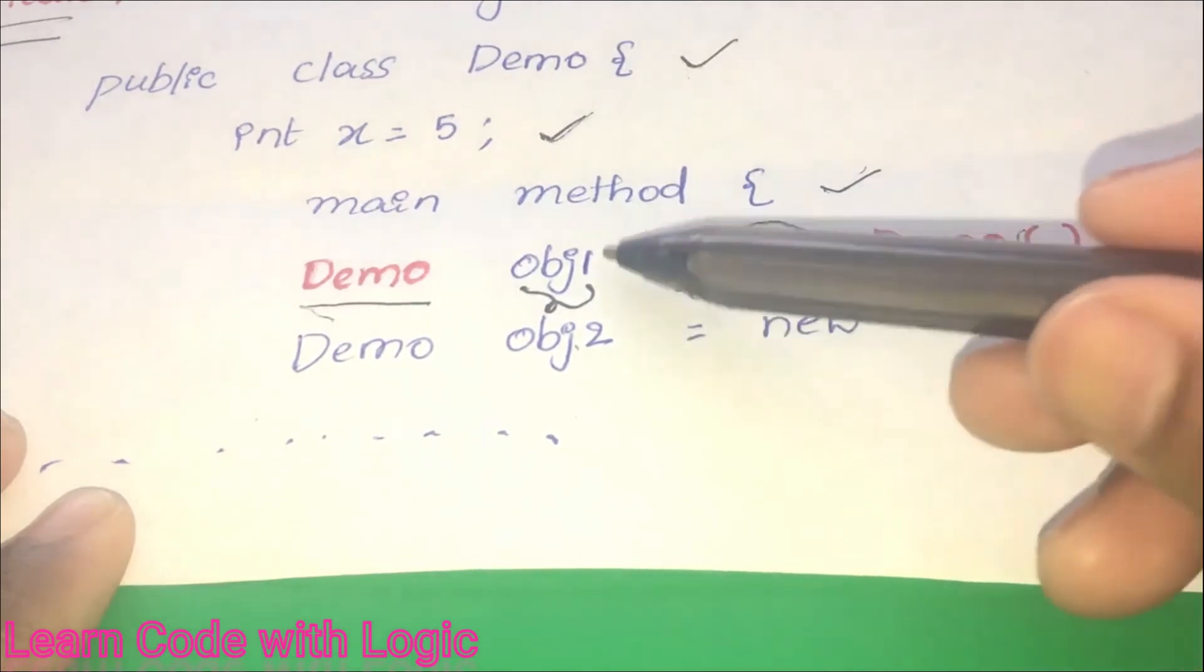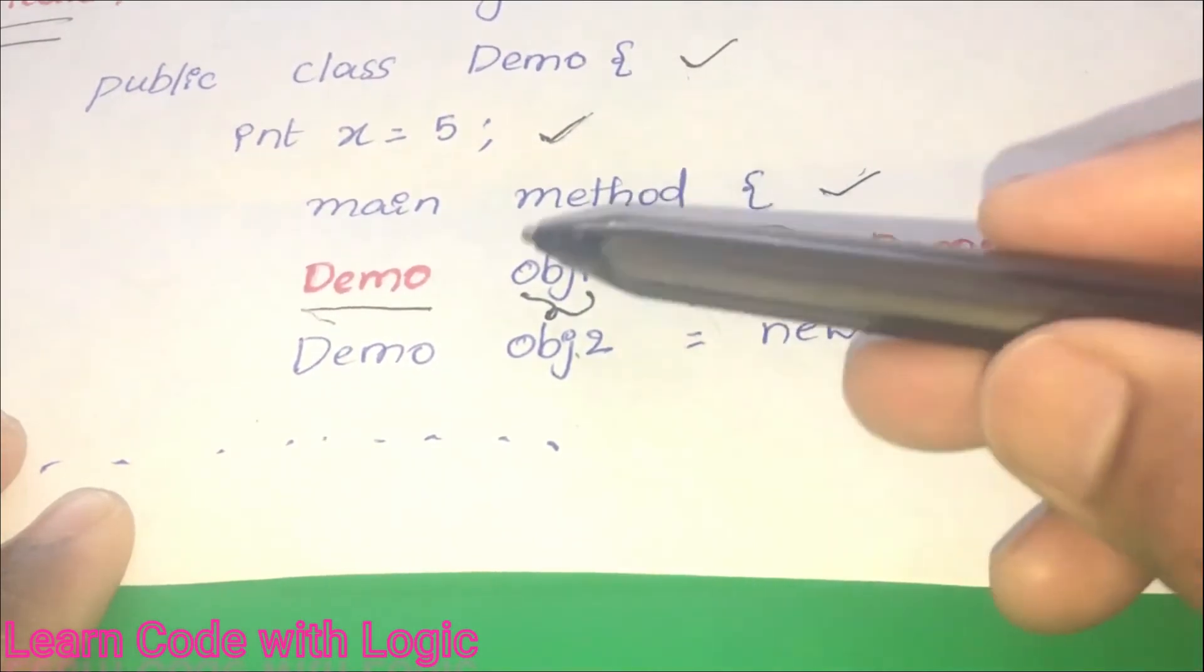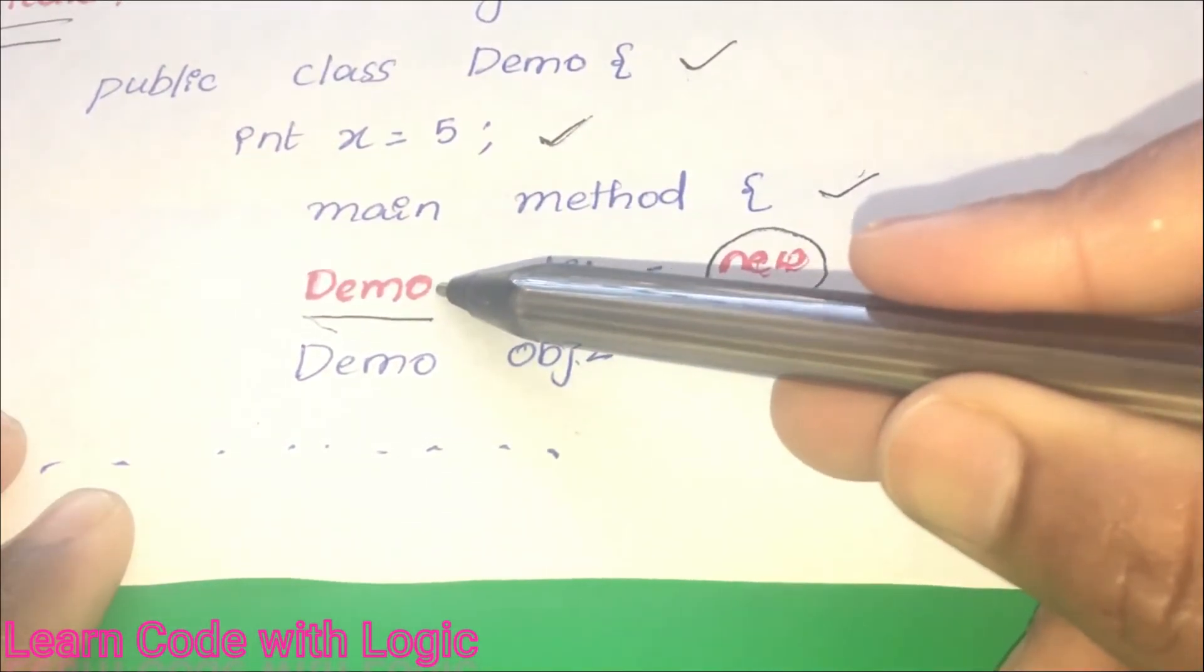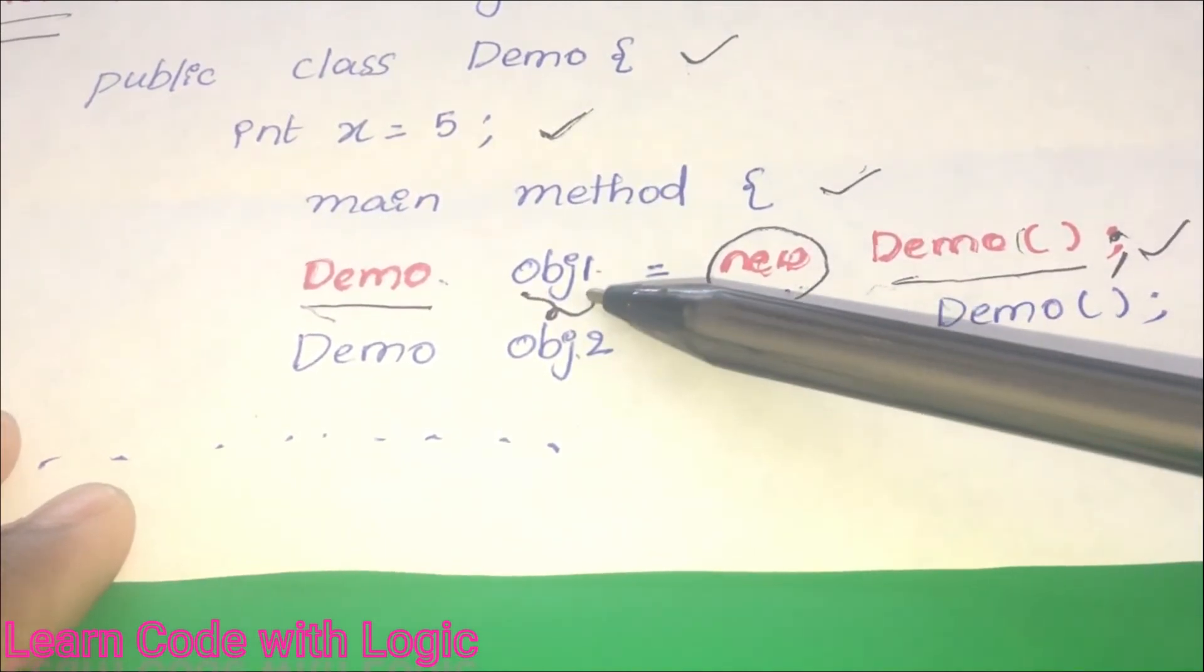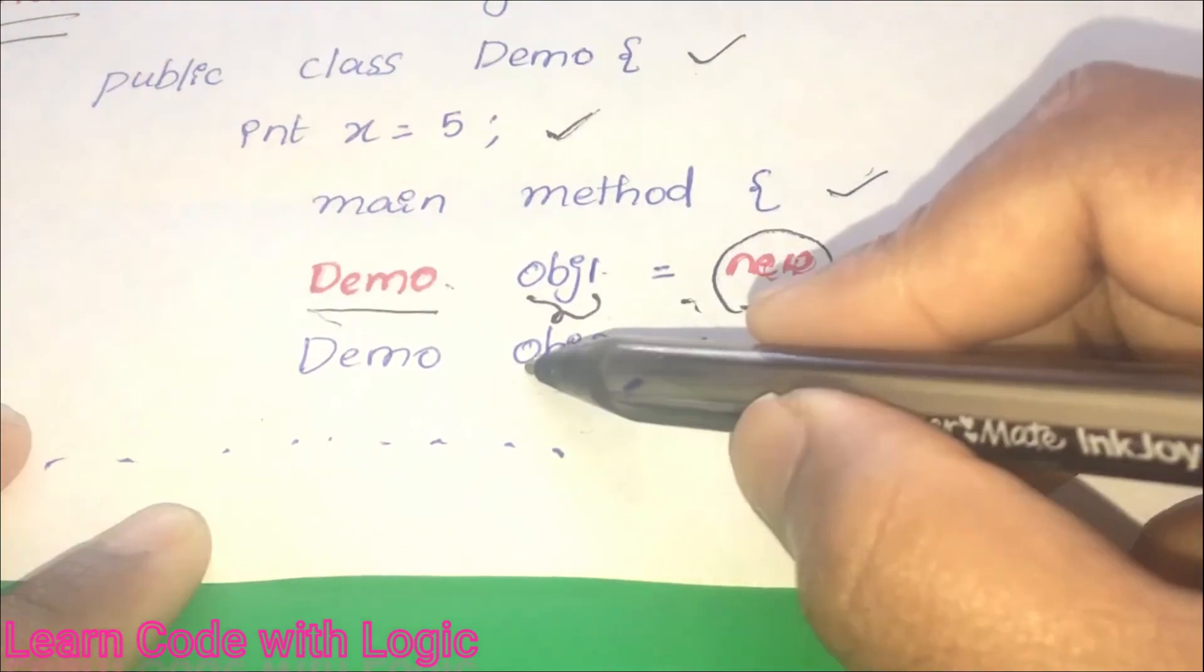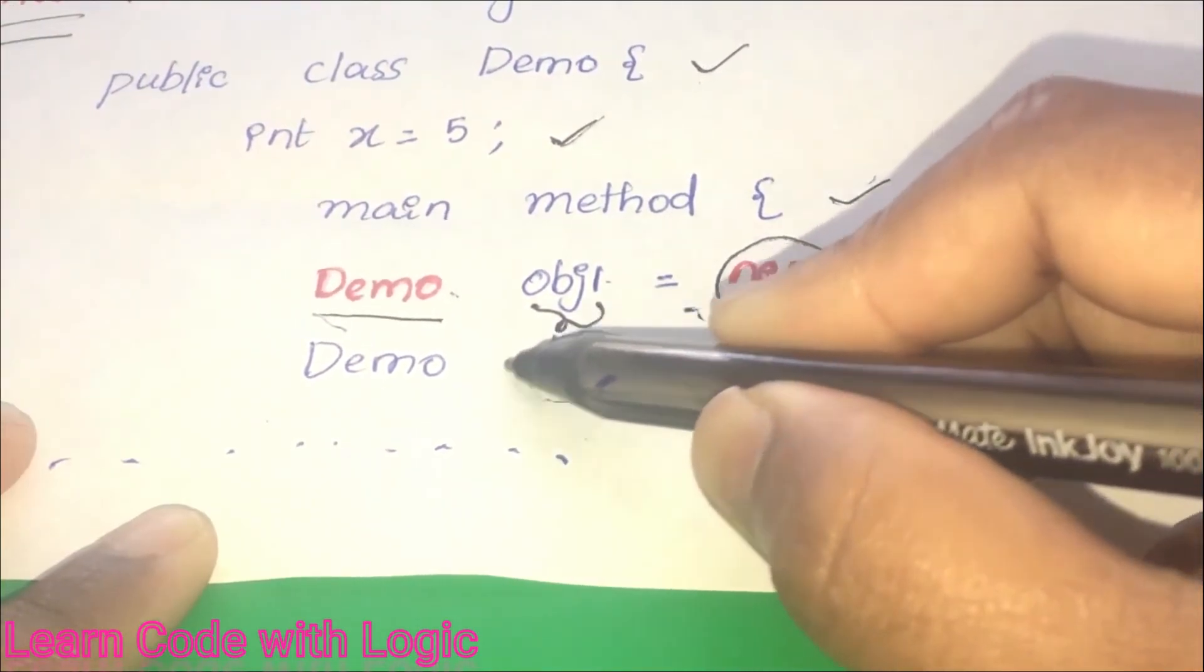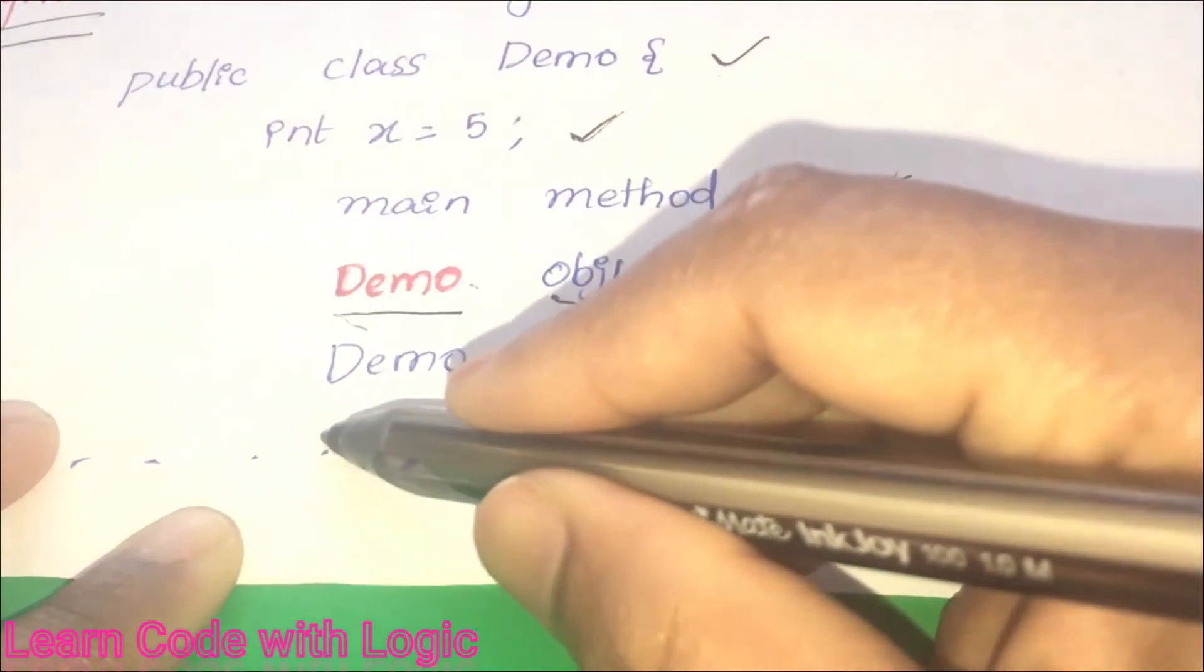The meaning of this one is object one is created for the class called Demo. If you see the new keyword here, we will understand that object is created here and we can also create more than one object for the same class.